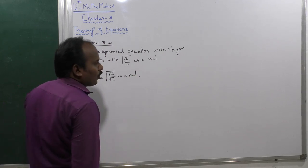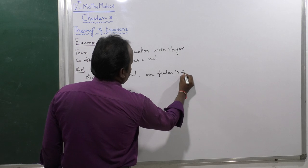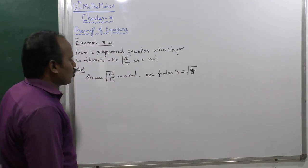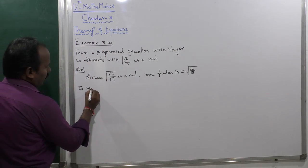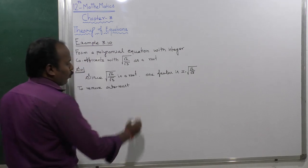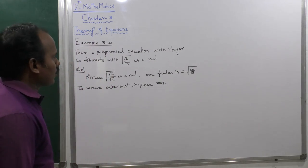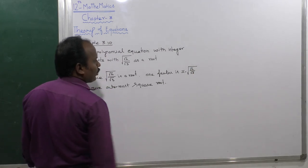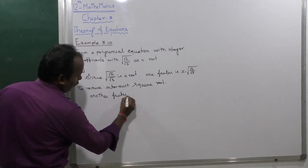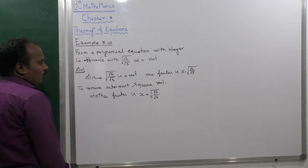...one factor is (x minus root of root 2 divided by root 3). To remove the outermost square root, that is our main goal. So one factor is (x minus root of root 2 divided by root 3) and another factor is (x plus root of root 2 divided by root 3).